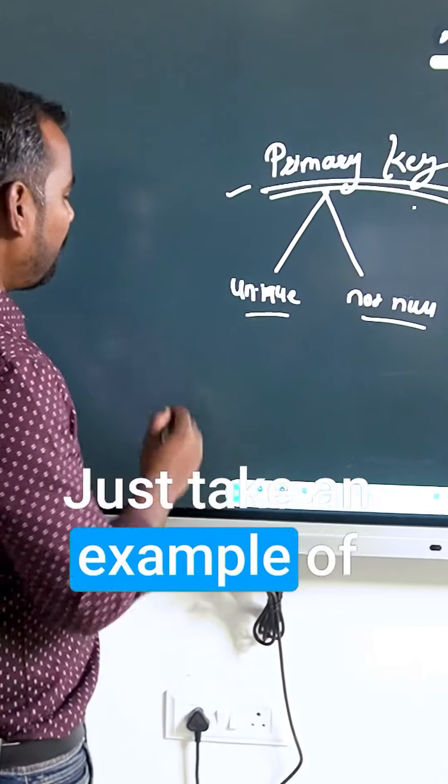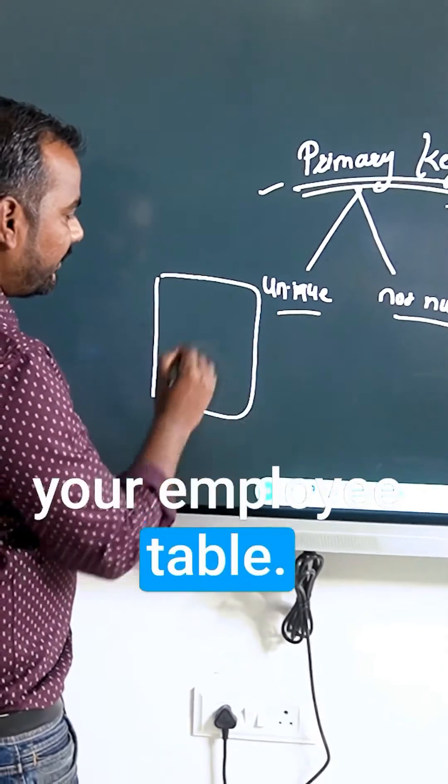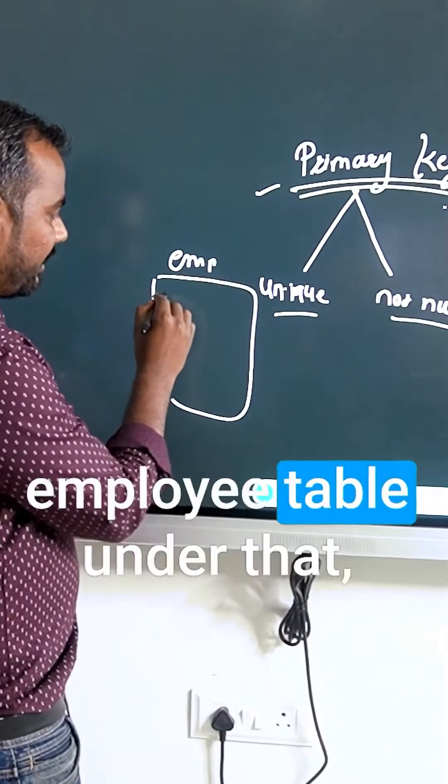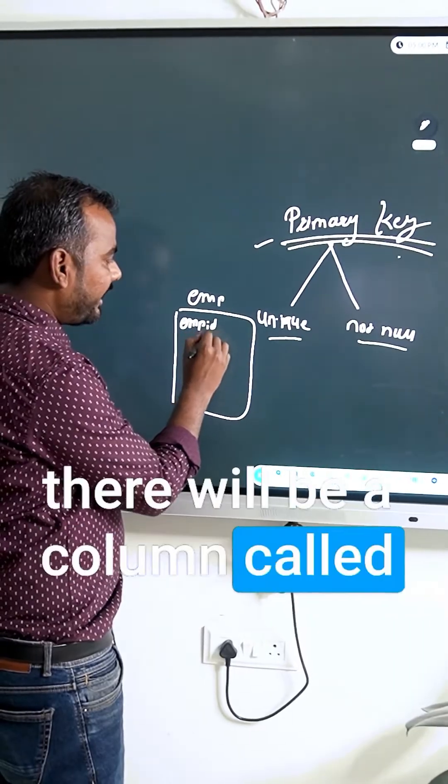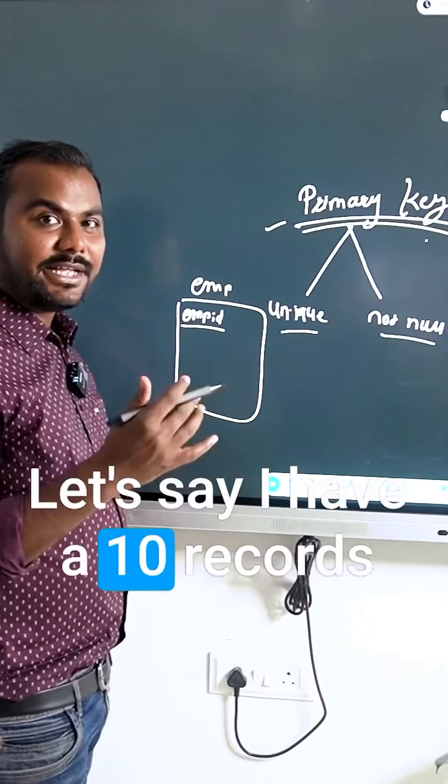Take an example of an employee table. Whenever we create an employee table, there will be a column called employee ID. Let's say we have 10 records.